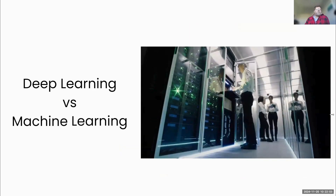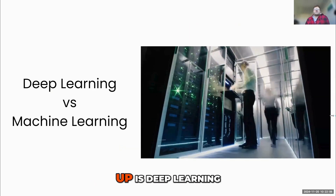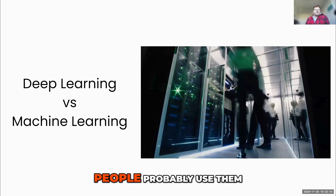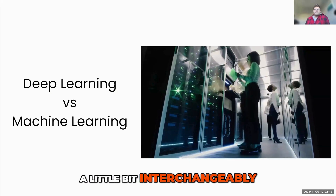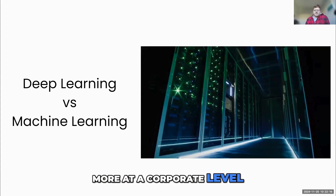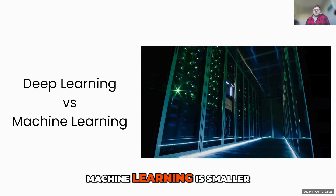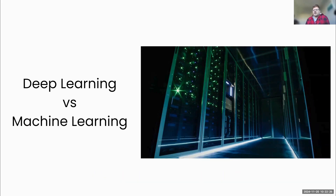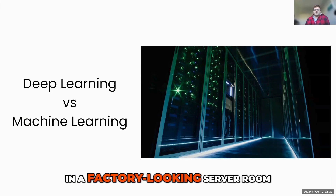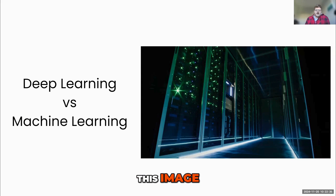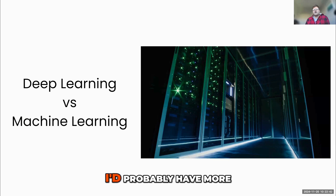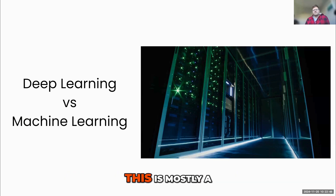Another term that comes up is deep learning versus machine learning. People probably use them a little bit interchangeably. Deep learning is just more at a corporate level — ChatGPT might be trained using deep learning, whereas machine learning involves smaller amounts of training. Initial models are created in a factory-looking server room like the one in this image, where you need to have a ton of processors. This is mostly a difference in scale.